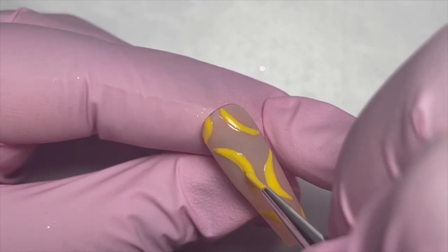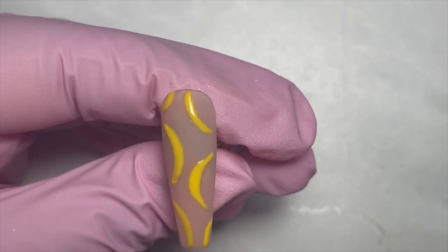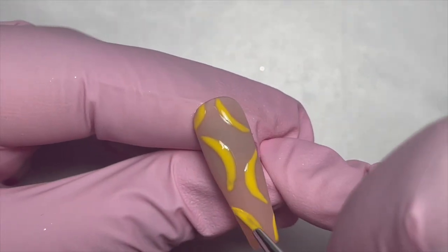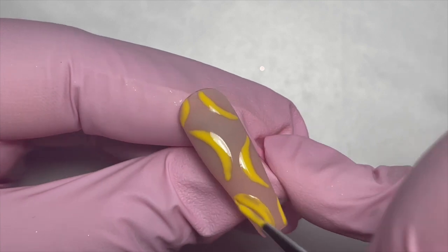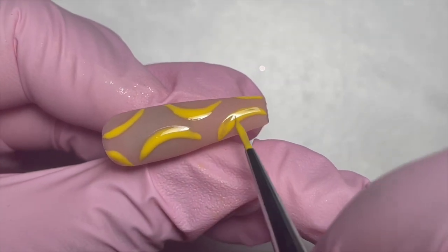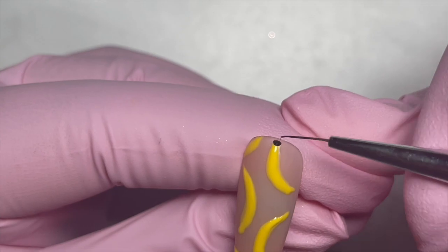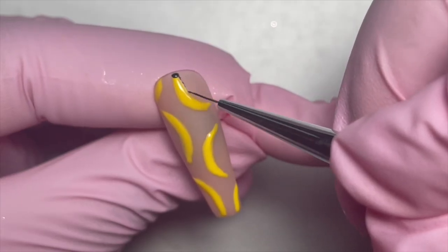I thought I would change up the shape a little bit - some of them are a little wonky with different movements and texture. That's what I wanted to create. After I refine that, I cure it for 60 seconds and then go in with black.